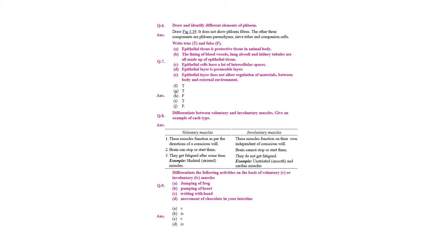Differentiate between voluntary and involuntary muscle. Voluntary muscles function as per the direction or control of our will; they get fatigued after some time. Example: skeletal or striated muscle. Involuntary muscles function on their own, independent of will; the brain cannot stop or start them and they do not get fatigued. Example: smooth muscle and cardiac muscle.